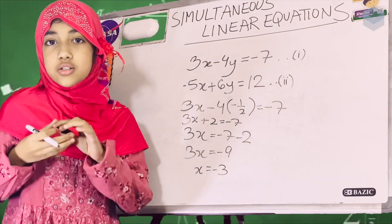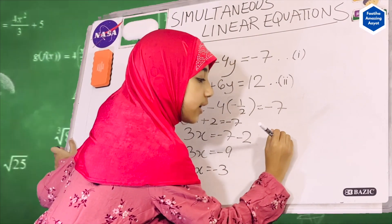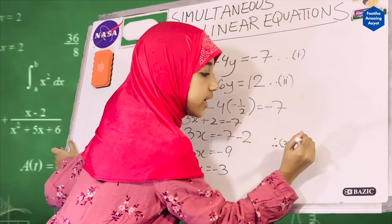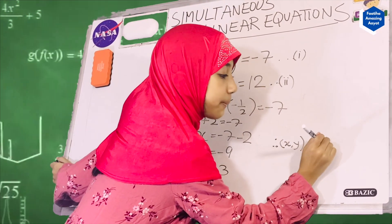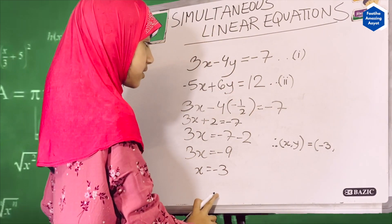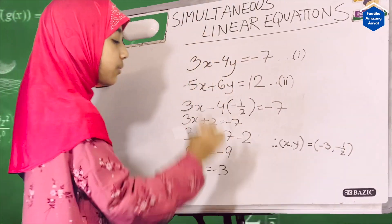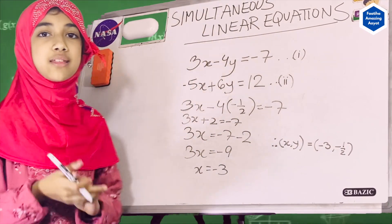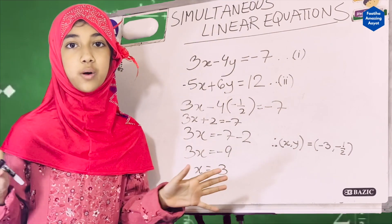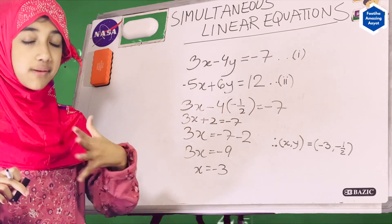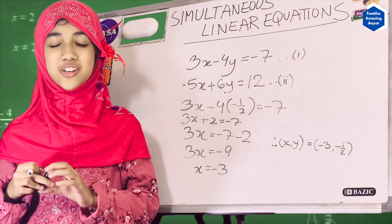So, therefore, our x and y coordinates would be — just like the substitution method — x equals minus 3, and y equals minus 1 over 2. This is exactly what we got in our substitution method. It's very simple with both methods. I prefer the substitution method, but you can do either one. I hope you all enjoyed this video. Thank you.